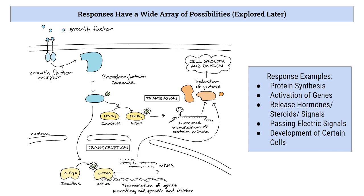The response can vary widely and includes things like protein synthesis, activation of genes, release of hormones or steroids, passing electrical signals, or development of certain cells. Here you can see the entire pathway: a growth factor ligand binds to the receptor, the receptor activates a G protein, which activates a phosphorylation cascade with enzymes passing phosphate groups to each other. This activates another protein, increasing translation and transcription — reading DNA to make proteins — producing many copies of a gene and turning them into proteins that help the cell grow and divide.